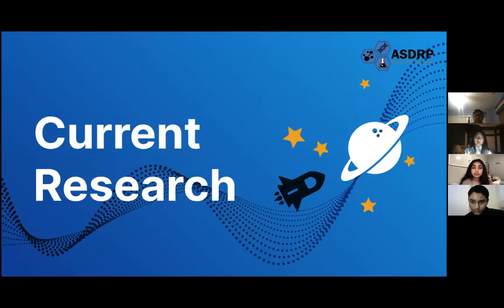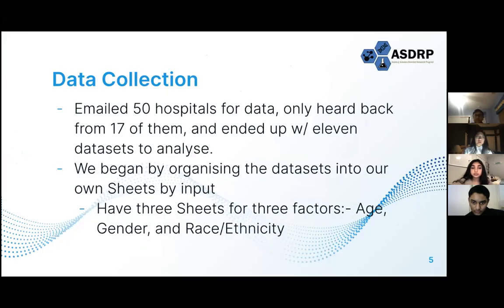For our current research, we emailed over 50 hospitals for data. We only heard back from 17 of them, and we ended up with 11 data sets to analyze. We began to organize the data sheets by three major factors — age, gender, race, and ethnicity — because we found that these factors overlap the most across our data sets.